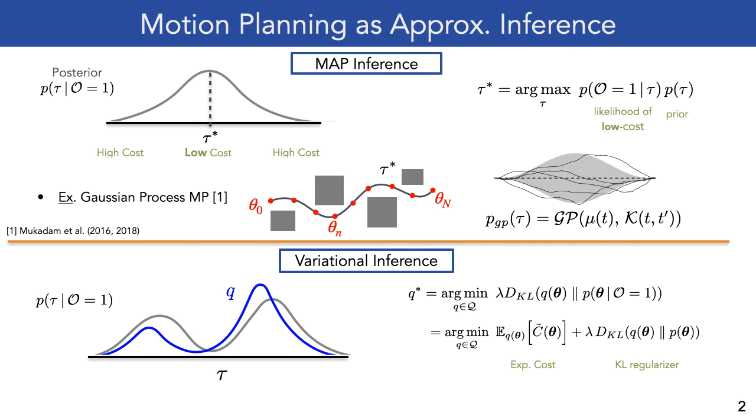However, the posterior distribution may be multimodal, often due to a non-convex cost function, such as the presence of obstacles.